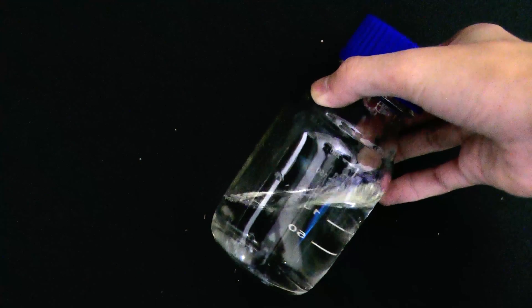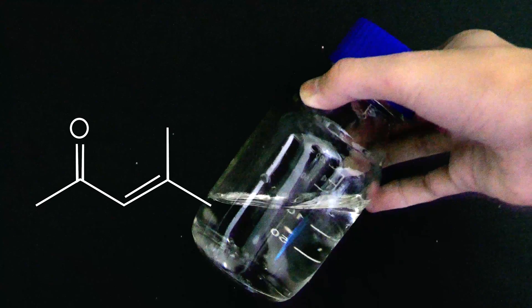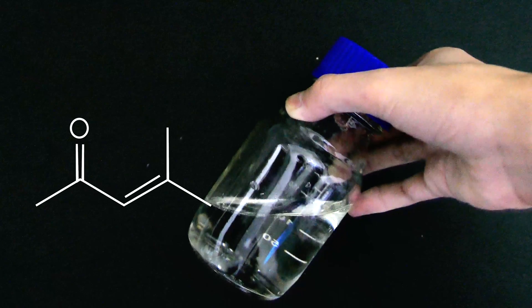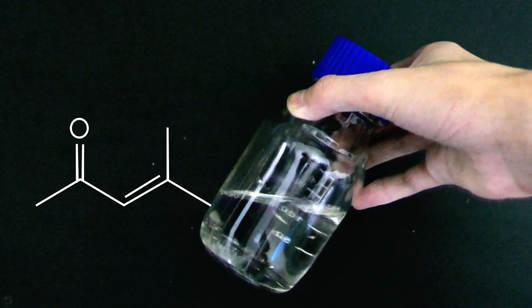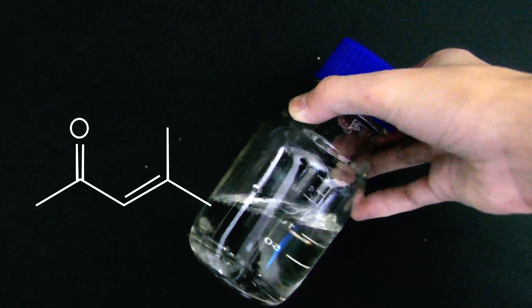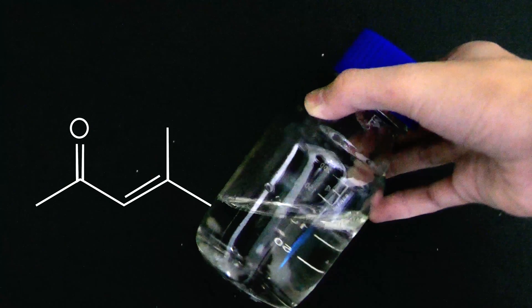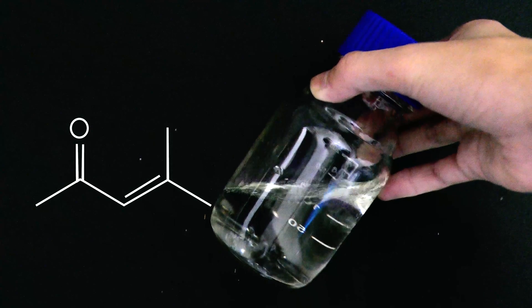In today's video, we're going to make some acetone oxide, which is a simple alpha-beta unsaturated ketone made from condensation between two acetone molecules. But instead of producing it from acetone, I'm going to make it from diacetone alcohol.